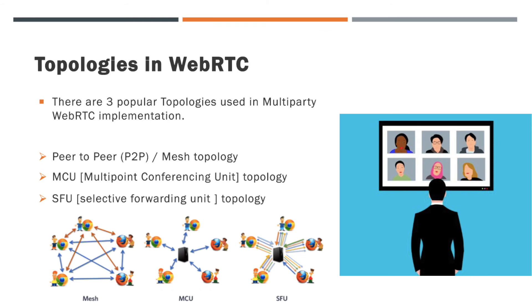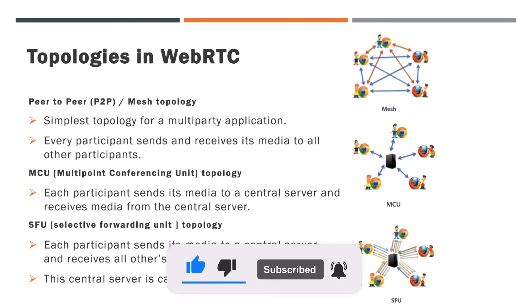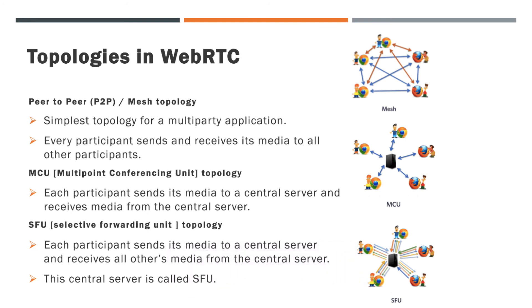Mesh topology is the simplest topology for a multi-party application — here every participant sends and receives its media to and from all other participants. In MCU topology, each participant sends its media to a central server and receives media from that central server. In SFU topology, each participant sends its media to a central server and receives all other participants' media from that central server — this central server is called the SFU.